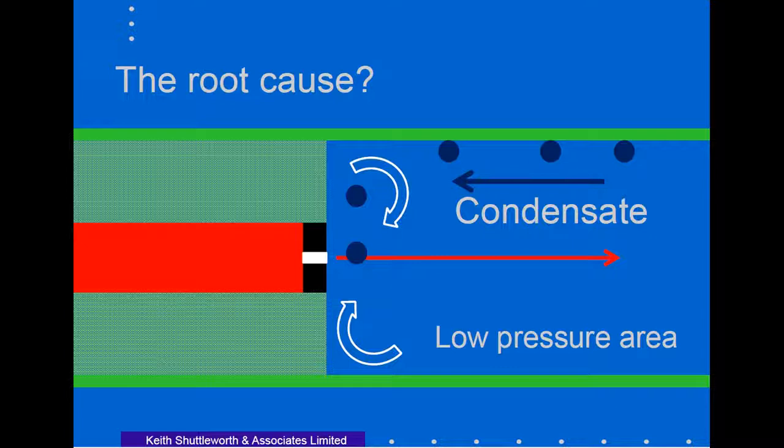It is believed that the flow of steam out of the orifice causes a low pressure area immediately adjacent to the orifice. This causes the condensate to flow in the reverse direction and allows the condensate to be entrained with the steam.